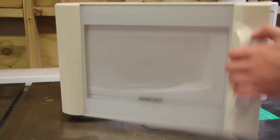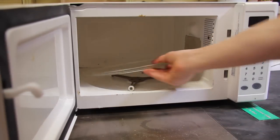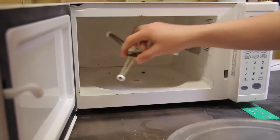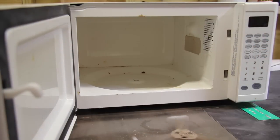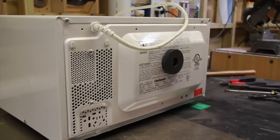We can start by taking out this glass plate and the spinner. Now I can begin to remove the screws.